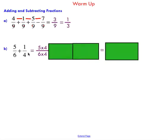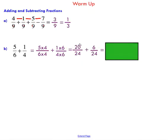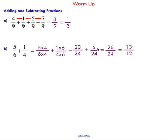I'm going to do the same thing for 1 over 4, except I'm going to multiply by 6 over 6 — that gives me 24 on the bottom. So I end up with two new fractions equivalent to my original two fractions. They now have a common denominator of 24, so I can add straight across and reduce my fraction to lowest terms.